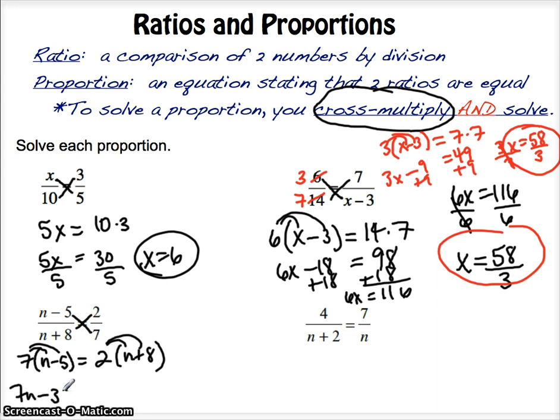You have to distribute on both sides. So, 7n minus 35 equals 2n plus 16. Minus the 2n, you have 5n minus 35 equals 16. Add the 35,